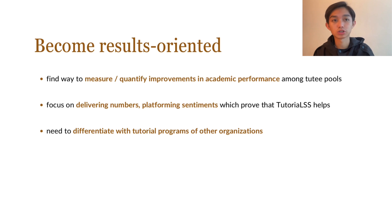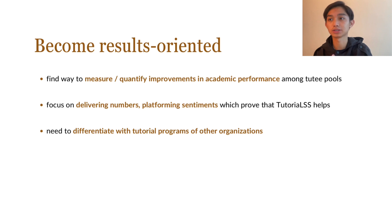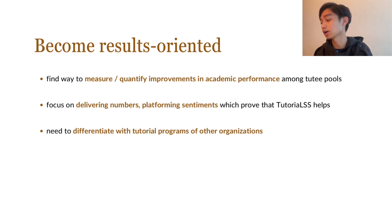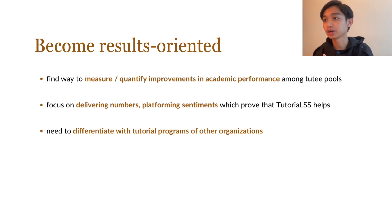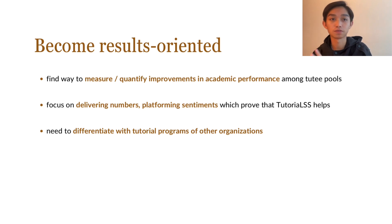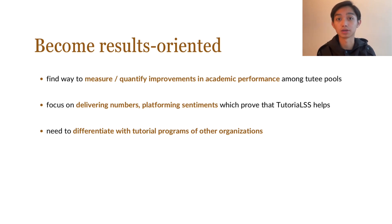We have to become results-oriented when it comes to operations here in Tutorials, because only by having results can we also effectively market. Number one is to find a way to measure or quantify improvements in the academic performance among our tutee pools. I understand that it's going to be a hard activity trying to follow up on our tutees — how they fared in the long tests they prepared for — but it's one of the only ways we can monitor our work here in Tutorials. Is it really effective, or are we just doing charity work? Number two, we have to focus on delivering numbers, and more importantly, platform sentiments which prove that tutorials help. So aside from the numbers, we also need to showcase sentiments and opinions from the tutees themselves that the tutorials help them in their long tests.